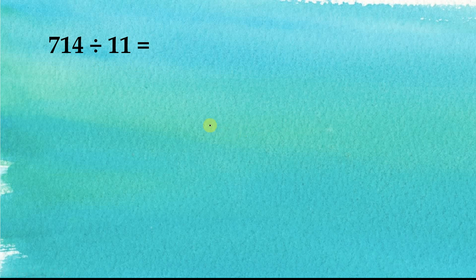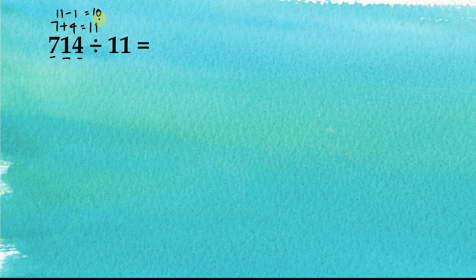First, let's check the sum of the odd digits. The odd digits are 7 and 4, so their sum is 7 plus 4 equal to 11. The even digit is 1, so 11 minus 1 equals 10, which means this number is not divisible by 11. When a number is not divisible by 11, to make calculations easier, we can change it to a nearby number which is divisible by 11.